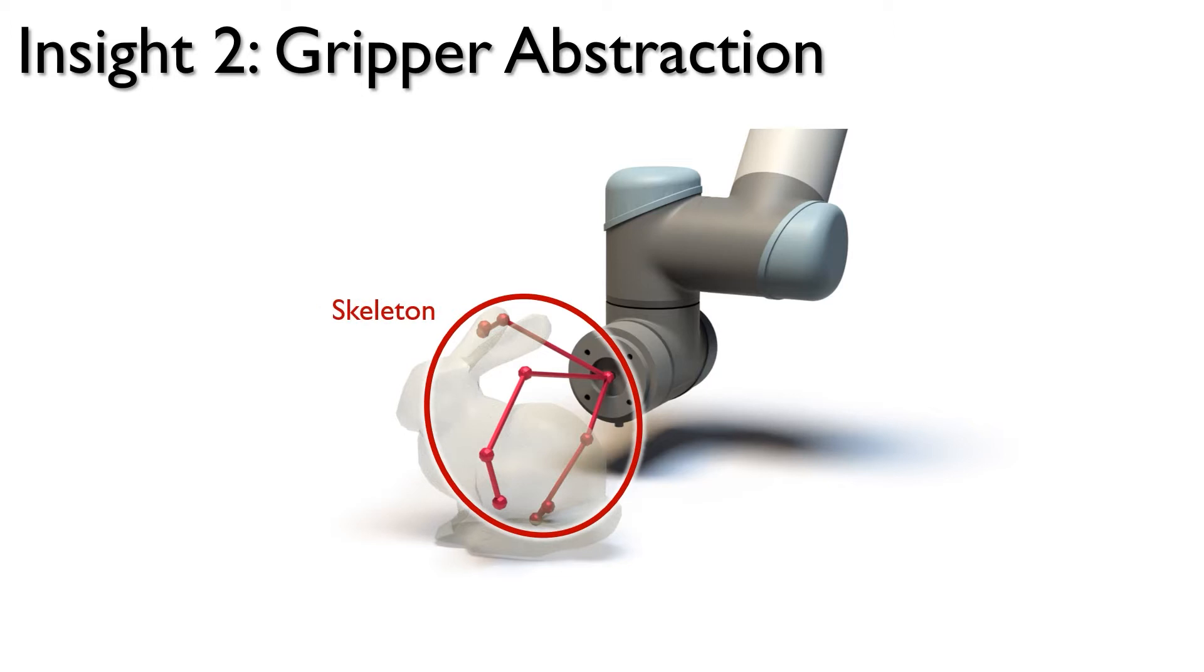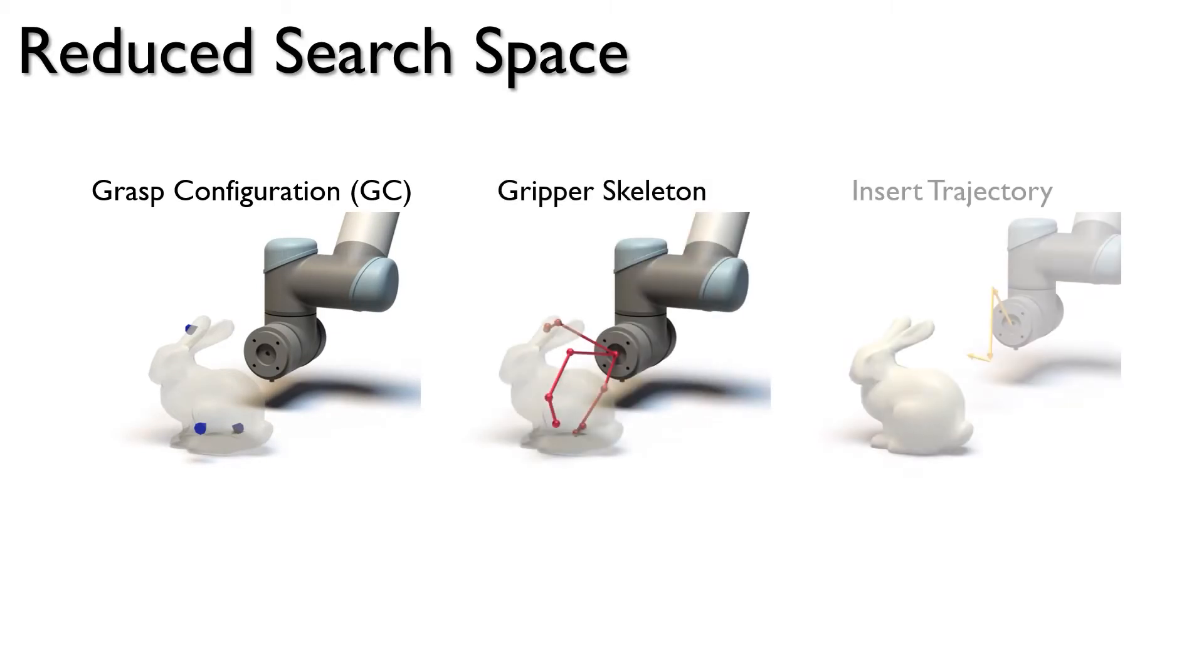With these key insights, we can define a reduced search space for passive grippers that involves finding a GC, a gripper skeleton, and an insert trajectory.